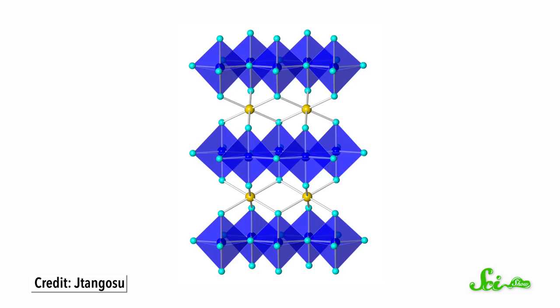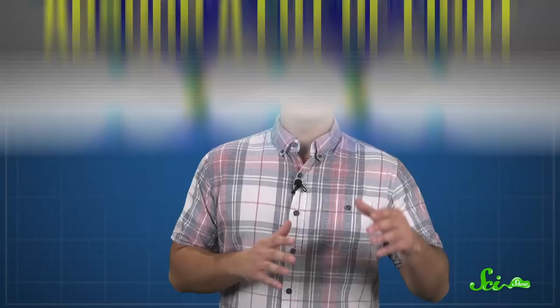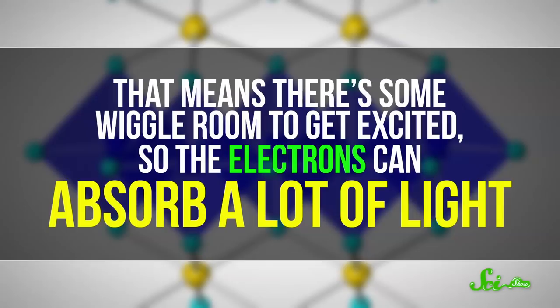The key to the color is how the manganese atoms are ordered within the crystal structure. They sit inside little pyramids surrounded by some oxygens. Because of the pyramidal shape, the manganese electrons are repulsed by different amounts by the oxygens, so they have different energies. That means that there's some wiggle room to get excited, so the electrons can absorb a lot of light. YInMn absorbs red and green light really well, but still reflects blue light, so it's a vibrant blue.